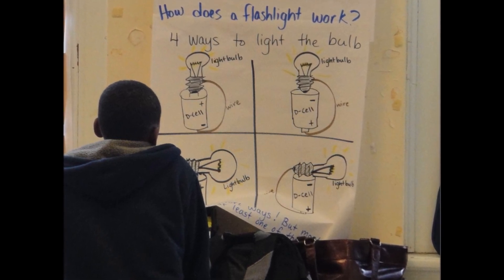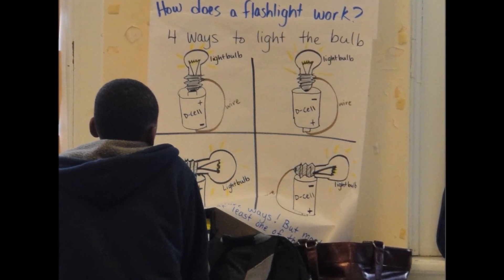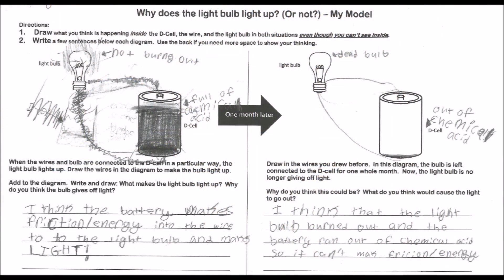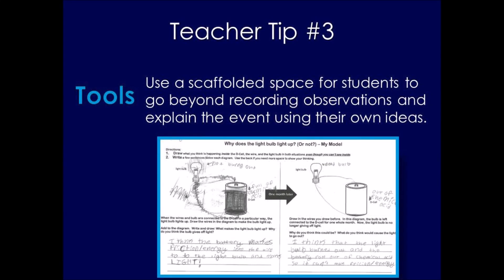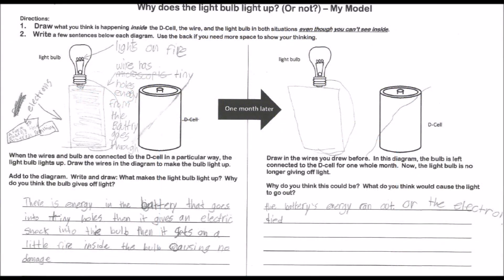After having a few students share their observations and take questions from their peers, the teacher had students help her create a public record of four functioning circuits to hang as a reference in the room. The next day, students worked on individual models to express their ideas about how they think a flashlight circuit works and what might happen if it were left on for 30 days. The teacher provided them with a blank writing scaffold and told them they could cross out, add, and change anything on the page to help communicate their ideas.